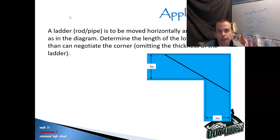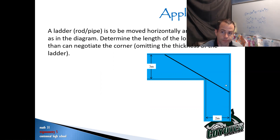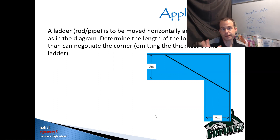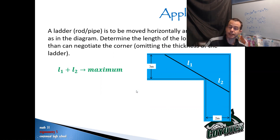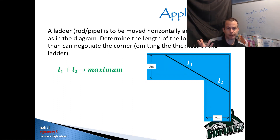I'm going to break my ladder into two pieces because I can see two triangles. I could draw a triangle here and a triangle here. So I'm going to call one of those pieces length one (L1) and one of those pieces length two (L2). If I want the total length to be a maximum, I'm essentially looking for L1 plus L2 — that's the total length of my ladder.